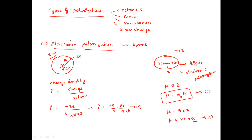Electronic polarization takes place in atoms. Whenever we apply an electric field onto the dielectric material, the atoms respond first. We consider an atom with radius r. In the absence of an electric field, the positively charged nucleus has charge +ZE and the negatively charged electron cloud has charge −ZE.